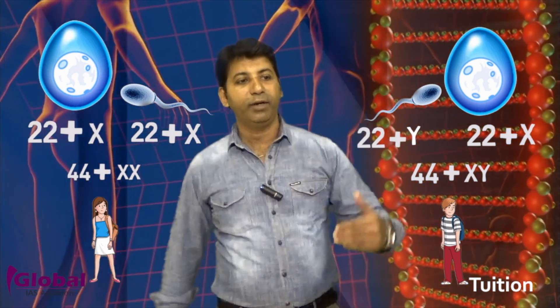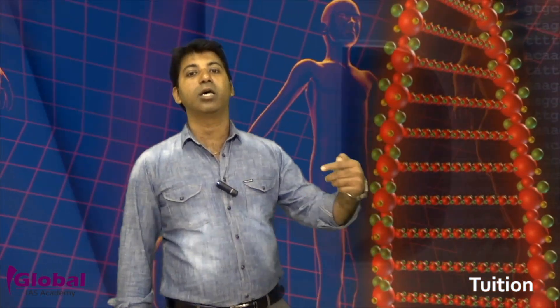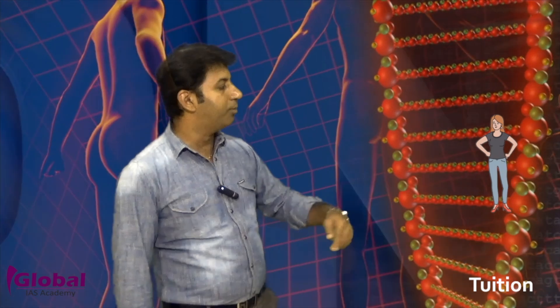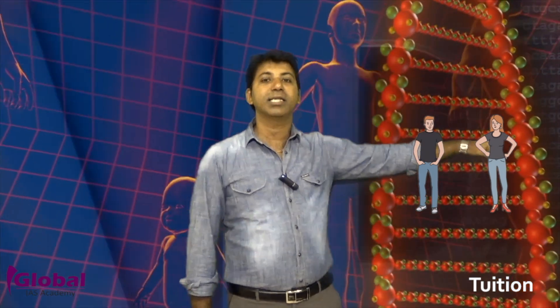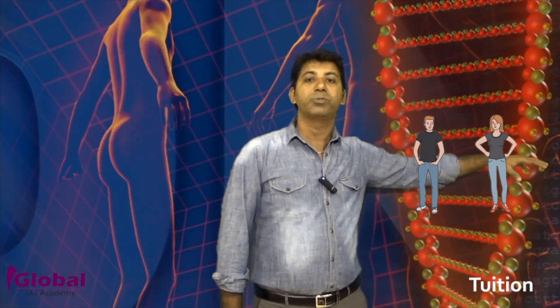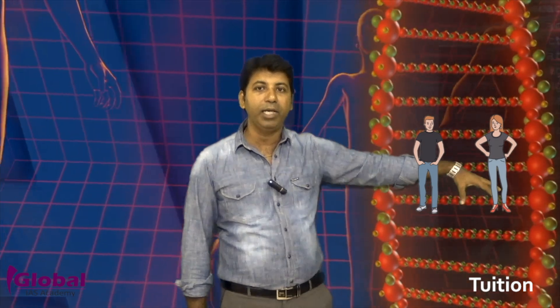Normally in society, if baby girls are born in a family, the entire blame is placed on the wife or the female. But the sex of the baby is entirely determined by the sperm — 22+X or 22+Y. The female has no role in deciding the sex of the baby; it completely rests on the male sperm. This disparity toward women starts within the family, so understanding this can help us educate both women and men.